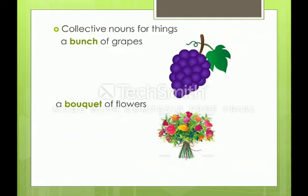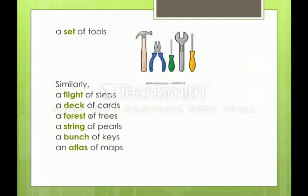Now, collective nouns for things. Can you see grapes here? We call it a bunch of grapes, and a bouquet of flowers. Bunch is a collective noun for grapes and bouquet is a collective noun for flowers. We can also say a set of tools, flight of steps, deck of cards, forest of trees, string of pearls, bunch of keys, an atlas of maps, a constellation of stars, a clutch of eggs, a range of hills, a clump of trees, a pack of cards. In this way, we have many more examples.